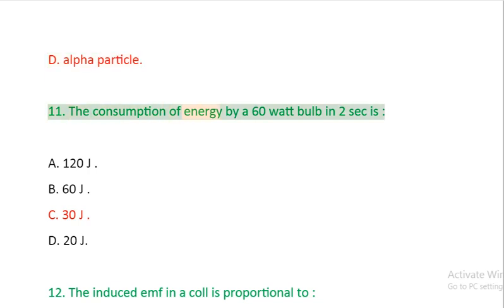Question 11: The consumption of energy by a 60 watt bulb in 2 seconds is: A: 120 J. B: 60 J. C: 30 J. D: 20 J.